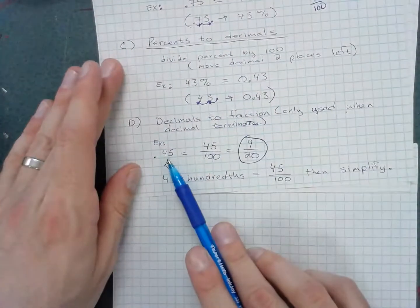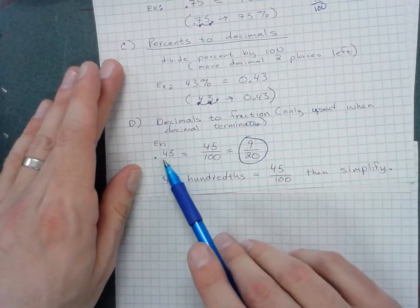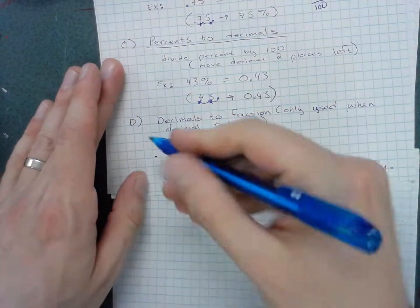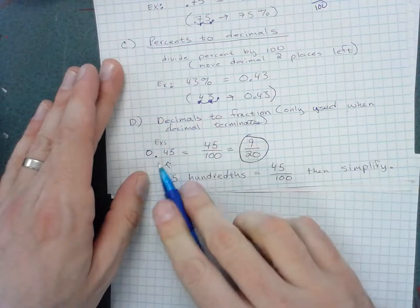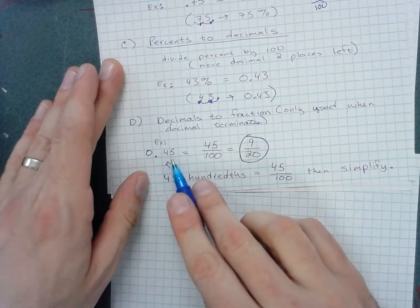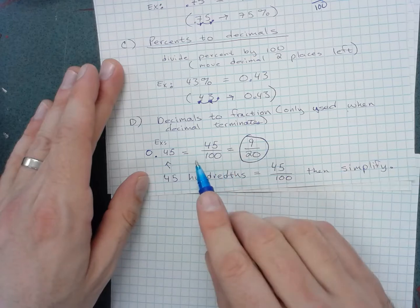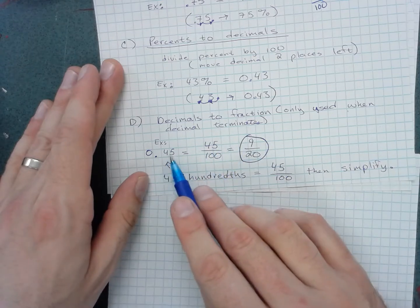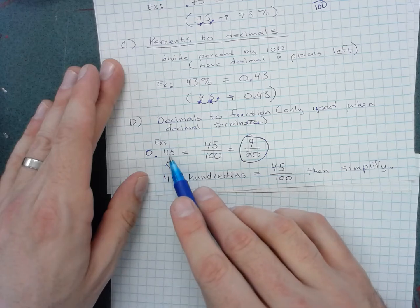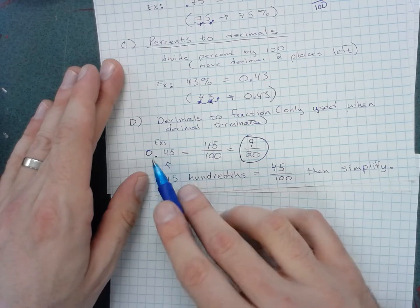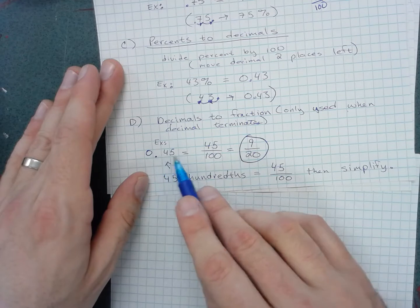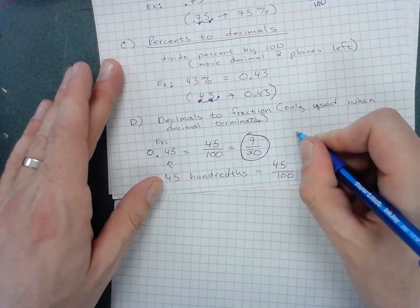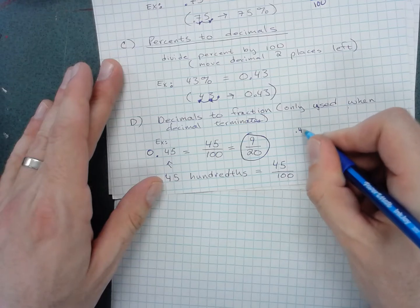Converting a decimal back to a fraction: the decimal 0.45 is 45 hundredths, and you convert it just like that. As many decimal places as you need to move to make your decimal a whole number, that many places you move in the denominator. Let me work that out.